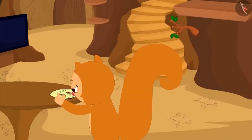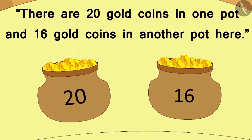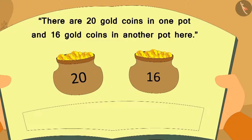This was the first picture in the book. There are 20 gold coins in one pot and 16 gold coins in another pot. And there was a blank space below the picture where a question related to the picture was to be written.